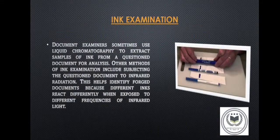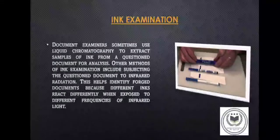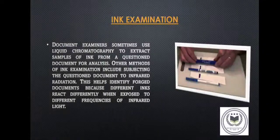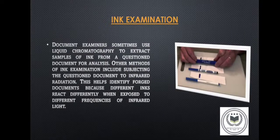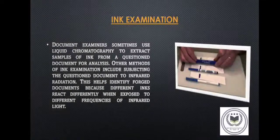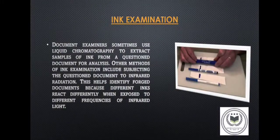Ink Examination: Document examiners sometimes use liquid chromatography to extract samples of ink from a questioned document for analysis. Other methods of ink examination include subjecting the questioned documents to infrared radiation. This helps identify forged documents because different inks react differently when exposed to different frequencies of infrared light.